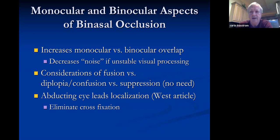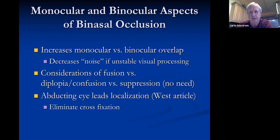Young children with visual confusion tend to develop suppression, which can lead to asymmetric esotropia or exotropia. If you place a binasal on, the patient no longer needs to actively suppress the second image. The advantage of a binasal for an esotropia case is you can work on getting them to freely alternate and not develop suppression — it's essentially an anti-suppression device. Also, the abducting eye leads localization: when looking to the right, the right eye has a faster pathway and the left eye follows with a slight delay.